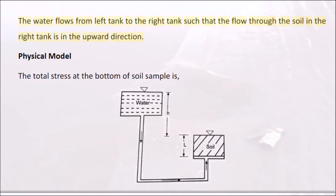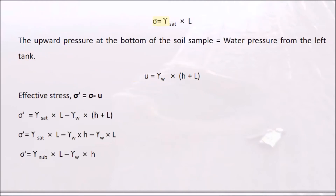In a physical model, water flows from a left tank to a right tank such that flow through the soil in the right tank is in the upward direction. The total stress at the bottom of the soil sample is σ = γs × l. The upward water pressure at the bottom equals u = γw × (hw + l). The effective stress is therefore σ' = σ − u.